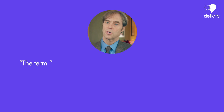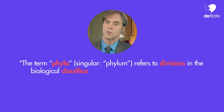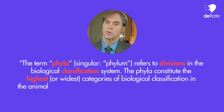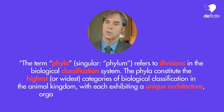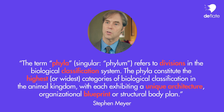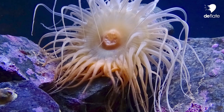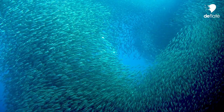Here's an important term you want to wrap your head around: phyla. Borrowing Stephen Meyer's definition, the term phyla — singular phylum — refers to divisions in the biological classification system. The phyla constitute the highest or widest categories of biological classification in the animal kingdom, with each exhibiting a unique architecture, organizational blueprint or structural body plans. For example, the phylum of arthropods includes all insects, all spiders, all types of crabs, lobsters, as well as trilobites. The phylum of cnidarians includes corals, jellyfish and sea anemones, and the phylum of chordates includes all birds, all reptiles, all fish and all mammals.